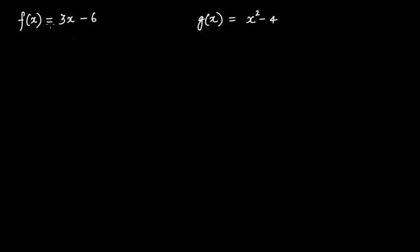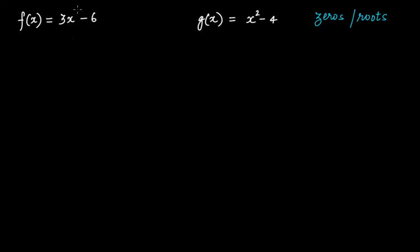We have two polynomials here, fx and gx. fx is equal to 3x minus 6 and gx is equal to x squared minus 4. Zeros or roots of a polynomial are those values of x for which this polynomial becomes 0. So in this case, for which value or values of x does this polynomial fx — that is 3x minus 6 — become 0?